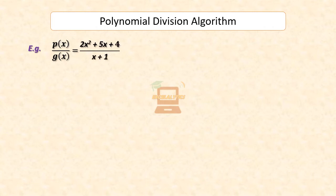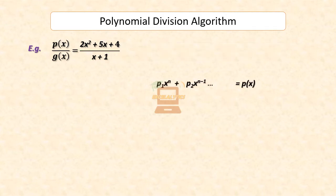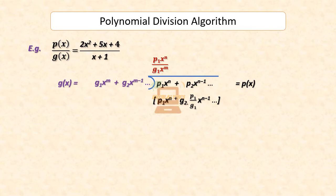Divide 2x squared plus 5x plus 4 by x plus 1. Before starting the division process, we should always make sure to express the dividend polynomial and the divisor polynomial in decreasing powers of x. We start by writing the dividend polynomial within the division symbol, followed by writing the divisor polynomial just left of it. We then proceed by finding a multiplier or quotient at each step that will make the highest power of the divisor same as that of the dividend polynomial with coefficient.